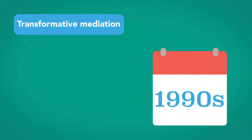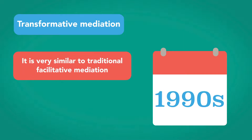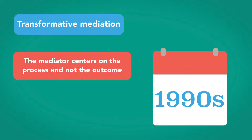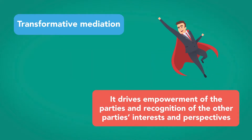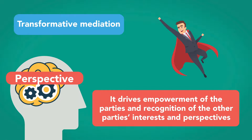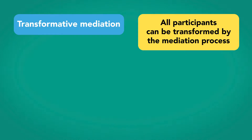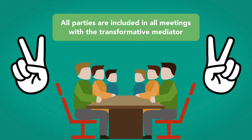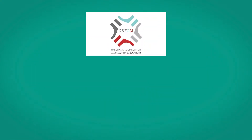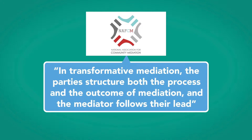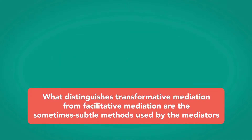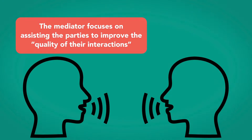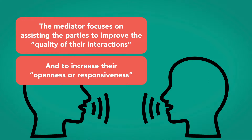Transformative mediation emerged in the 1990s as an innovative new form of mediation. It is very similar to traditional facilitative mediation in that the mediator centers on the process and not the outcome. It drives empowerment of the parties and recognition of the other parties' interests and perspectives. The theory is that all participants can be transformed by the mediation process. All parties are included in all meetings, and the mediator encourages peaceful interactions. In transformative mediation, the parties structure both the process and the outcome, and the mediator follows their lead. What distinguishes it from facilitative mediation are the subtle methods used by mediators to assist parties in improving the quality of their interactions and increasing their openness or responsiveness to the other parties.